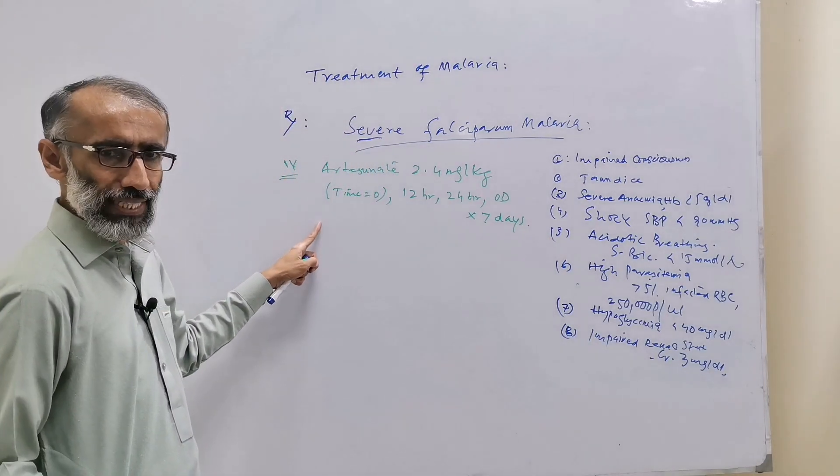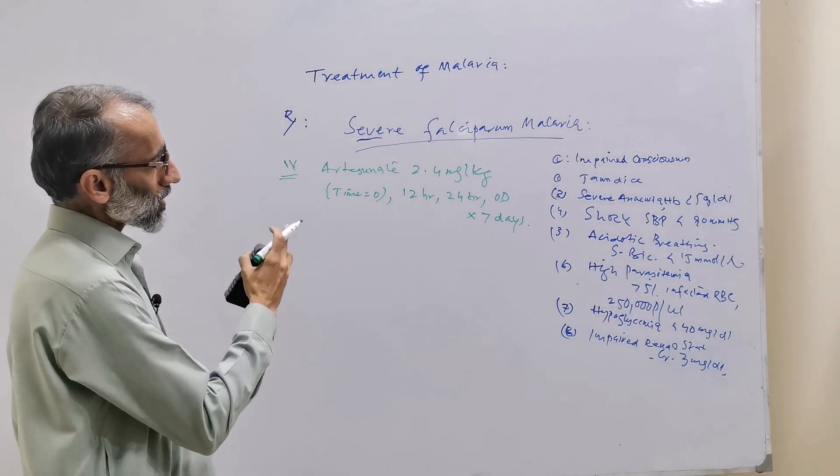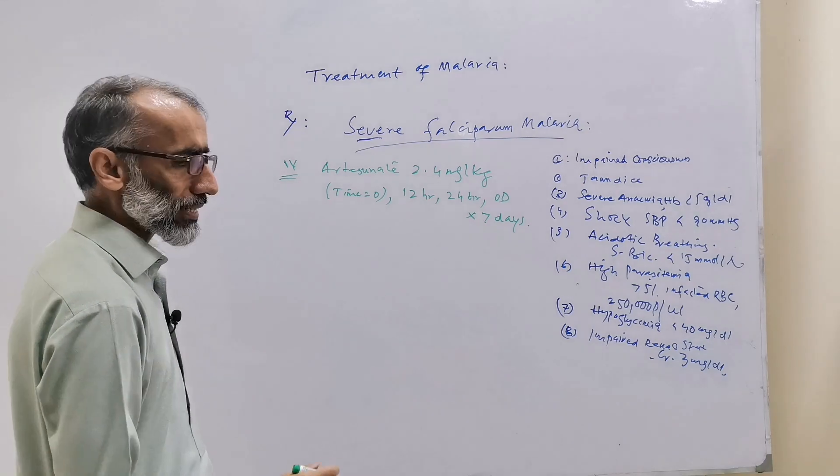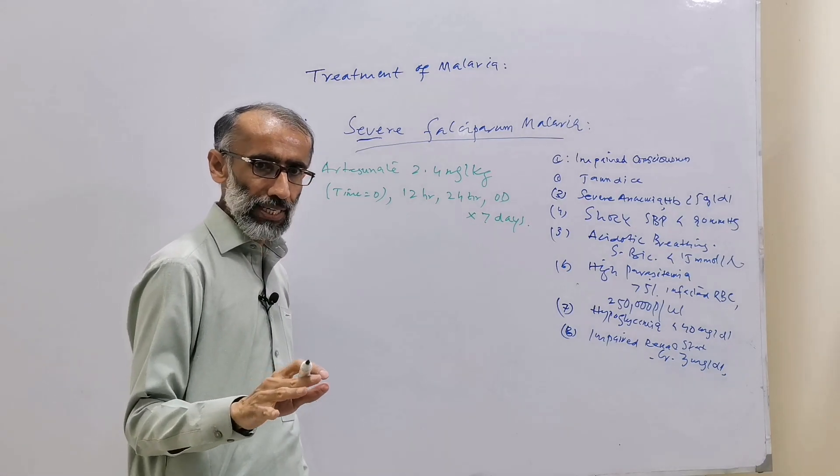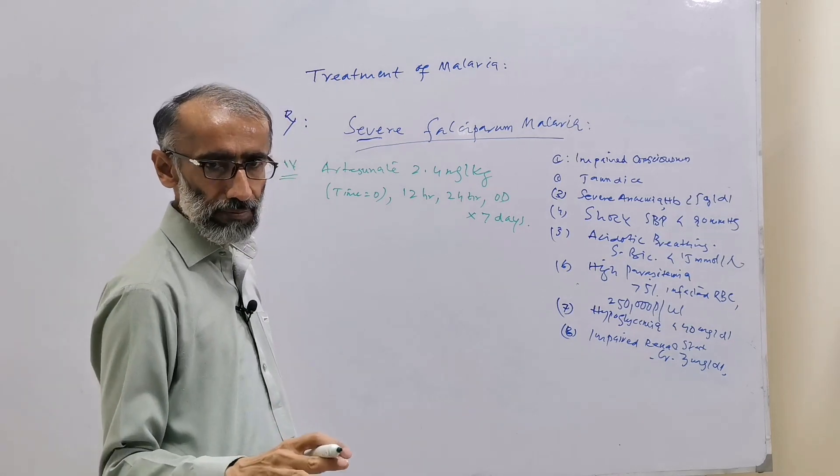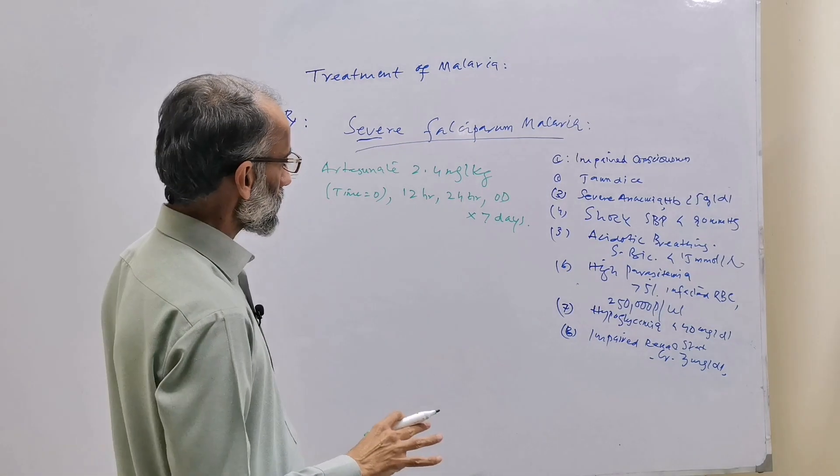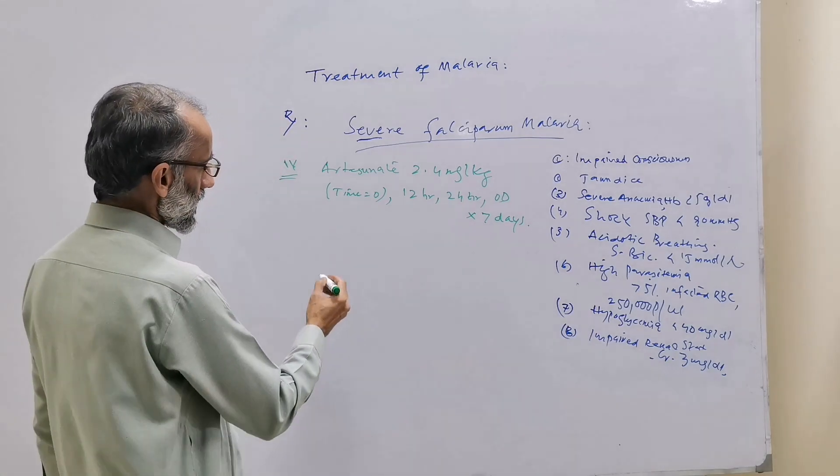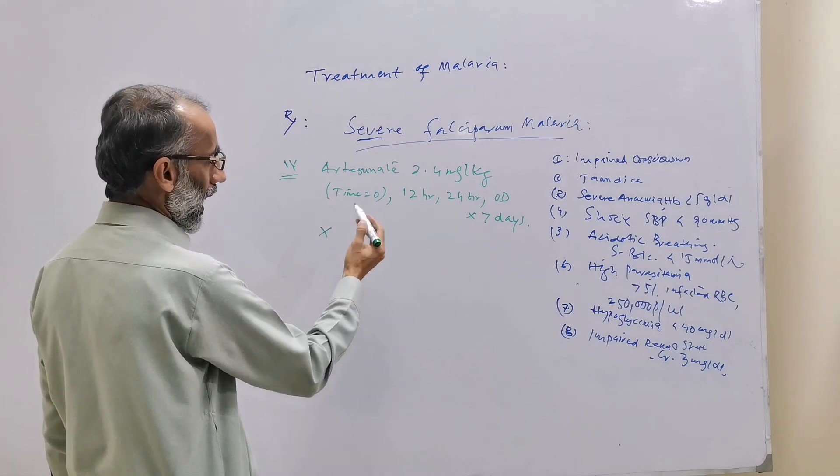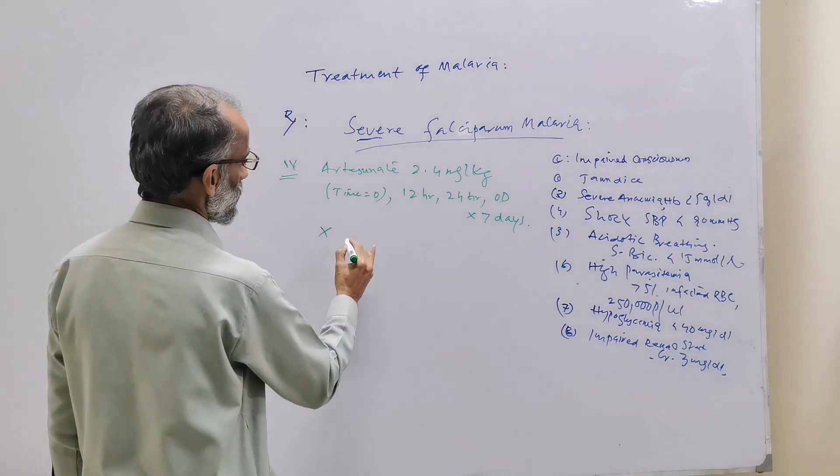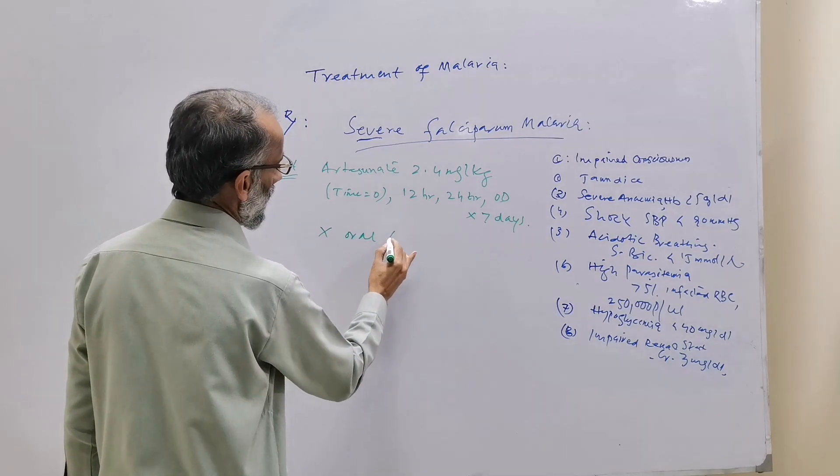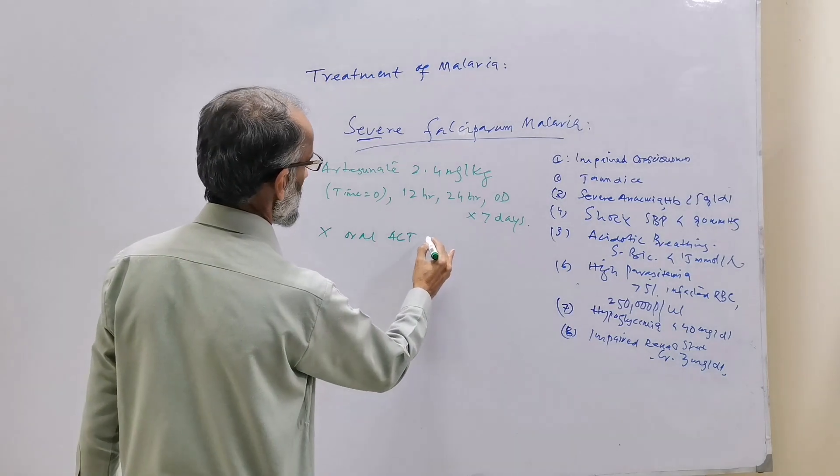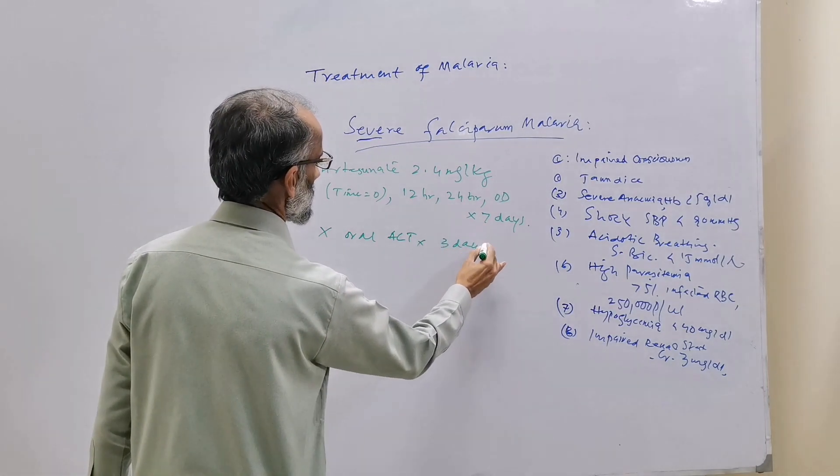If Artesunate is started, it must be continued for minimum 24 hours irrespective of oral tolerability or improvement of the patient. After you observe that your patient is improving, then switch from IV Artesunate to oral Artemisinin Combination Therapy for three days.